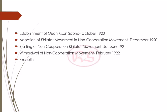Then in 1924 there was the execution of Alluri Sitaram Raju. He was the leader of rebels of the Gudem Hills of Andhra Pradesh and claimed to have supernatural powers. With him ended a two-year armed rebellion against the British. He was executed in 1924.